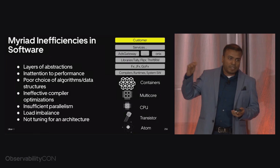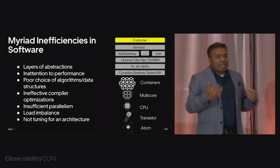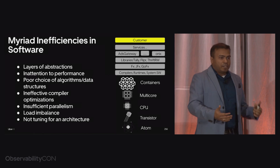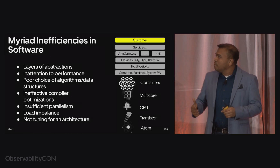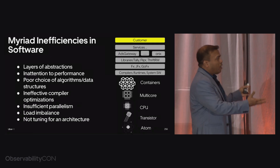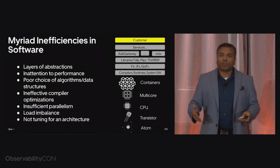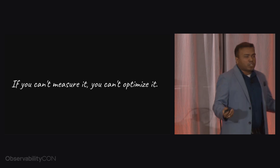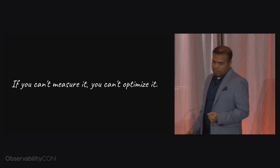Behind these microservices — these are touching customers — but if you look under the stack, there are several libraries, systems, containers, all the way to the atom. There's a huge stack, and there are myriad inefficiencies in the software in each one of these layers. That's room for optimization. However, if you can't measure it, you can't optimize it. And that's where our profiling comes in.